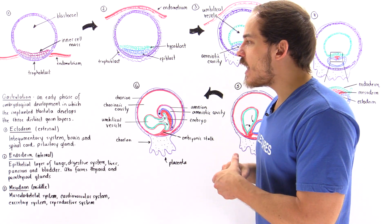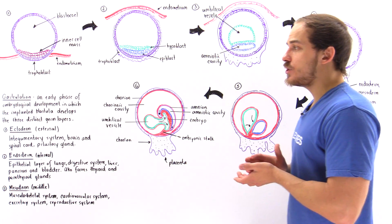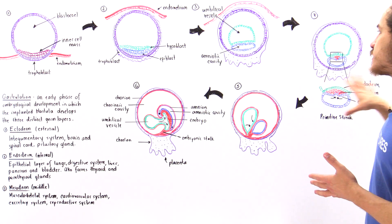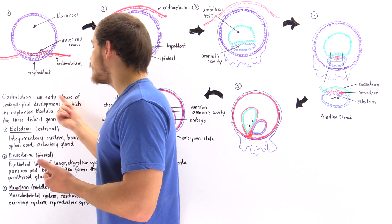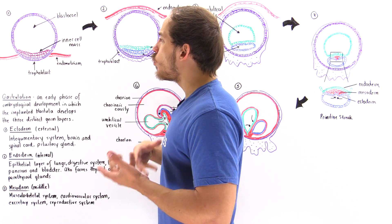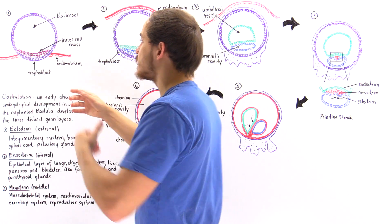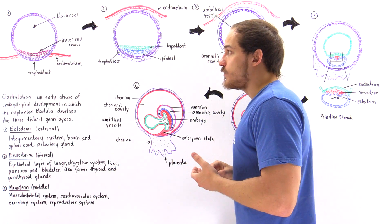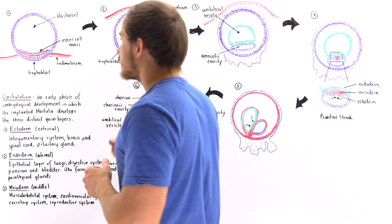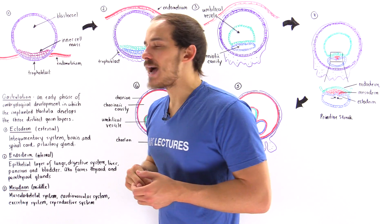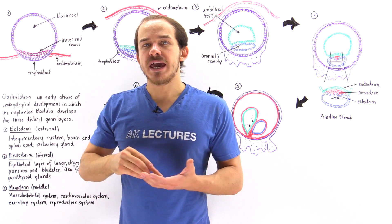These are the three different layers formed during gastrulation. Now let's look at six diagrams that describe the process of gastrulation and the formation of the three distinct germ layers. Diagram one describes the process of implantation — when the blastocyst implants itself onto the endometrium, the lining of the uterus. The blastocyst consists of a region known as the trophoblast, shown as the dark purple cells.